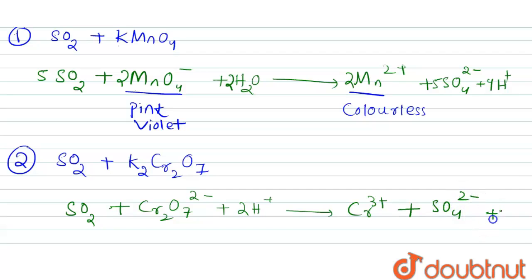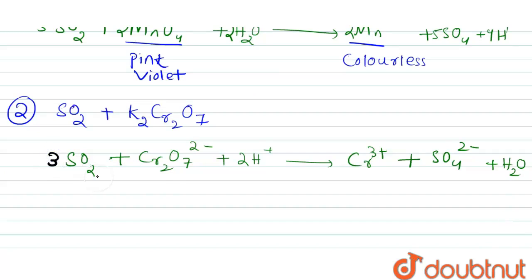Let's balance this reaction. The coefficients are: 3 SO₂, 3 SO₄²⁻, 2 Cr₂O₇²⁻ (multiplied), and 1 H₂O giving 2 H⁺. This is the required balanced reaction.